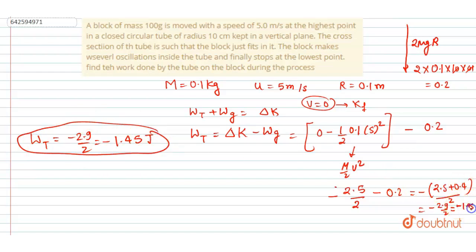So this is our answer. You can also write it as work done by tube is equal to change in kinetic plus change in potential, right? Because work done by gravity is nothing but change in potential energy. Simple, so this is our answer.